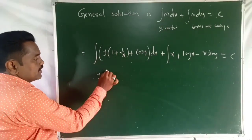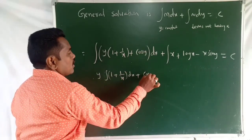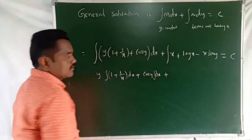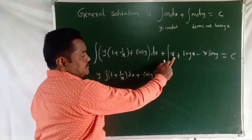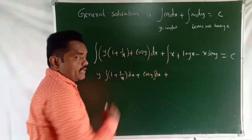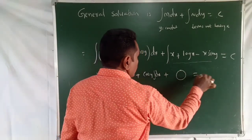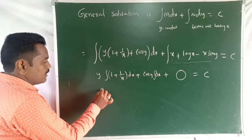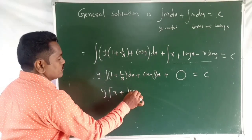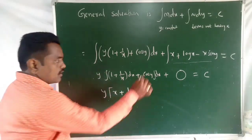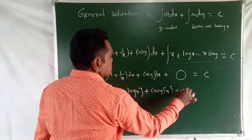Treating Y as constant, the integration of M dx becomes: Y times integration of (1 + 1/X) dx plus cos Y times integration of dx. This gives: Y(X + log X) + cos Y · X. For the N dy part, we take only terms not having X — there are none, so that contributes 0. The result equals C.